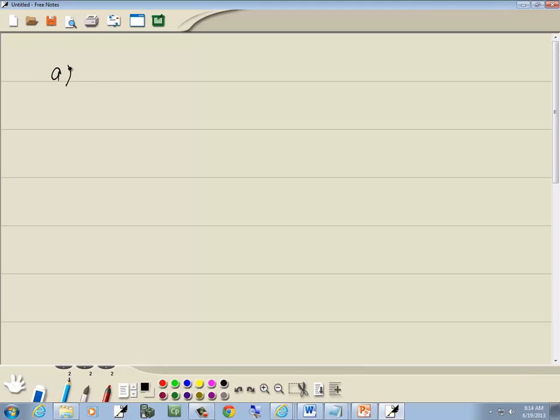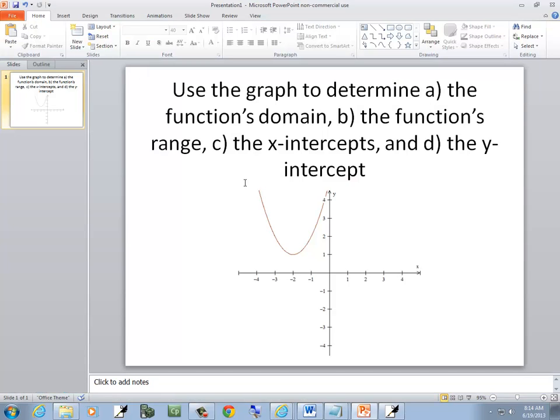So for A, the domain. Now, domain is the x-values where the graph exists. As this goes up here, see how it just appears to stop, but it keeps going on forever. Over here, it appears to stop, but it keeps on going forever.